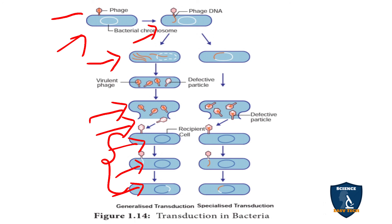In generalized transduction, the phage carries bacterial DNA from all parts of the chromosome. In specialized transduction, only a specific portion of the phage DNA and the bacterial cell interact — they join and travel together. That is called specialized transduction.